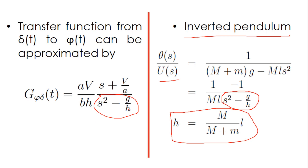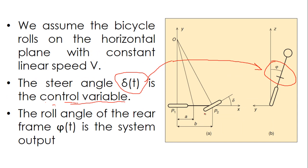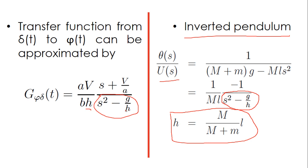In this case, what is h? h is in fact the distance to the center of gravity of your bicycle. Imagine that here you have the center of gravity — h will be this distance. And a is this distance from the projection of C1 to this point. So it is interesting to see that we have the same type of dynamics in terms of the denominator of the transfer function.